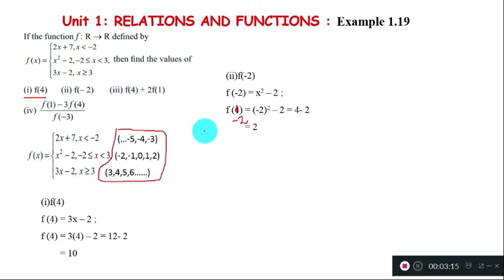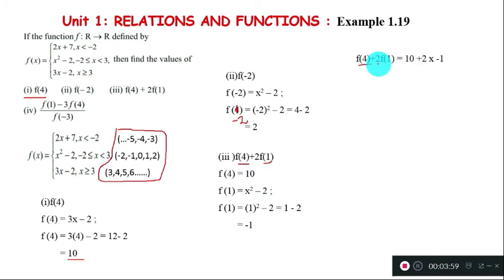For part (iii), f(4)+2f(1): We already found f(4)=10. Now for f(1), since 1 falls in the second interval, we use x²-2. So f(1) equals 1²-2, which is 1-2 = -1. Therefore, f(4)+2f(1) equals 10 plus 2 times -1, which is 10-2, giving us the answer 8.